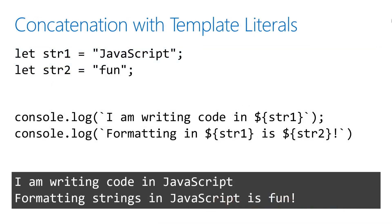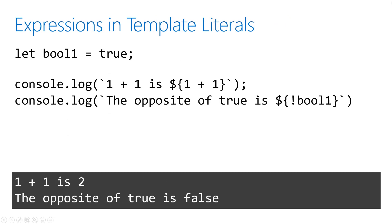Let's look at some examples. In this first example, I have two string variables that I want to insert into two sentences. All I have to do is reference them by name and insert them into the placeholders to complete the sentences. In this next example, we're using some expressions. The first console.log is adding some numbers, but the second one is using the not operator to flip the value of the Boolean defined at the beginning. So all I have to do again is use placeholders to insert these values.